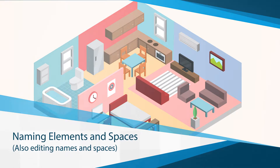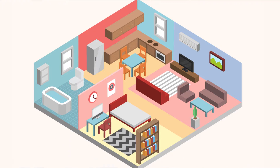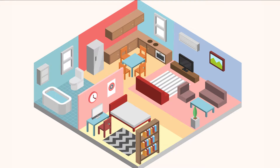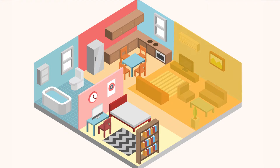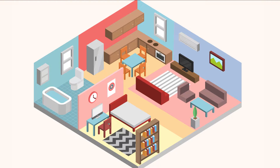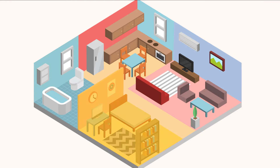Naming elements and spaces — also editing names and spaces. From the manage elements page, you can begin to name your elements and define your spaces. A space can be a room, an area of the house, or several areas that will be controlled together.